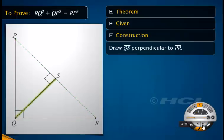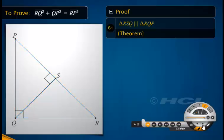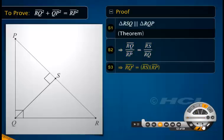Draw QS perpendicular to PR. Observe that triangle RSQ is similar to triangle RQP by the theorem that states the triangles on both sides of the perpendicular are similar to the whole right-angled triangle. The ratio of corresponding sides of similar triangles is equal. Cross multiplying the equation of step 2, we get the square of side RQ equal to the product of RS and RP.